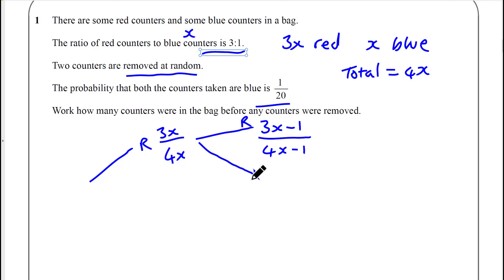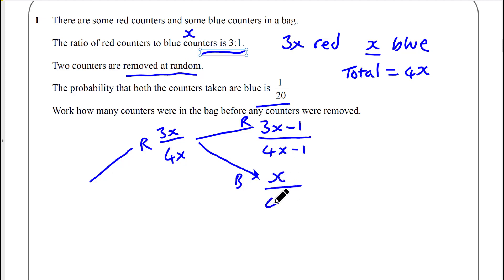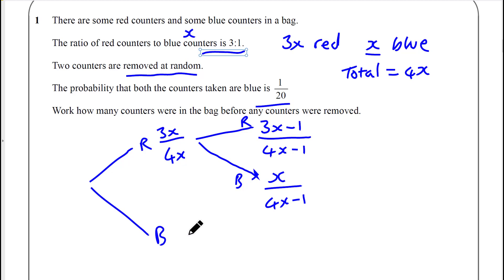Let's do the whole tree — it'll be easier. Blue on the first pick has probability x over 4x. No blues have been removed at that point, so it's x blue remaining, but there are 4x minus 1 total counters in the bag.